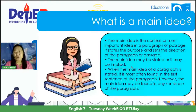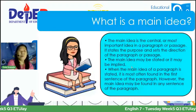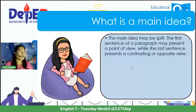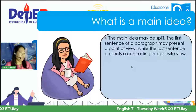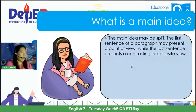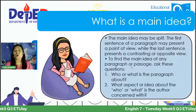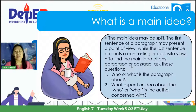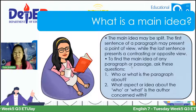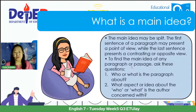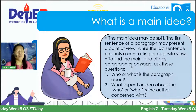The main idea may also be split: the first sentence of a paragraph may present a point of view, while the last sentence presents a contrasting or opposite view. To find the main idea of any paragraph or passage, ask the following questions: first, who or what is the topic? And second, what aspect or idea about that who or what is the author concerned with? Please take note of these two questions.